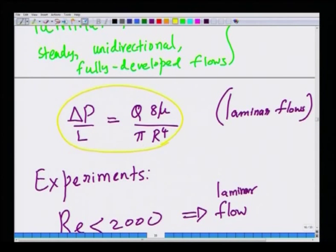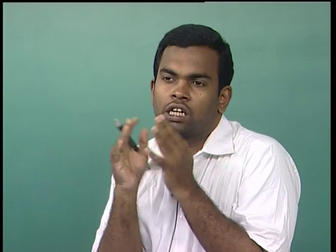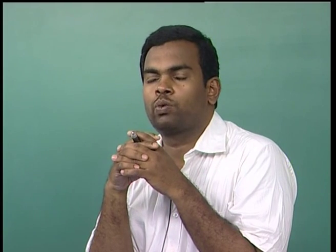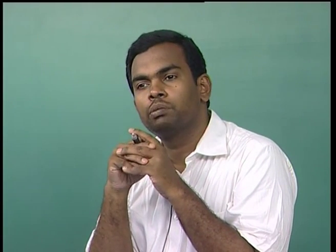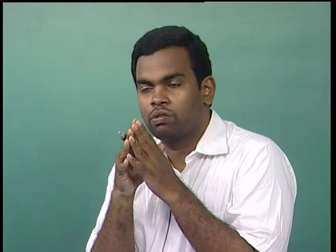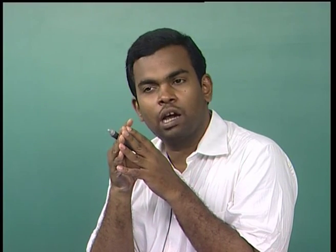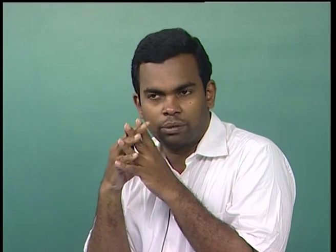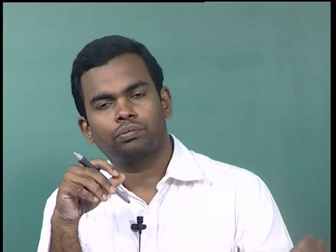When the Reynolds number is greater than 2000, there is a transition to turbulence and the laminar flow relation no longer works. In industrial applications, flow is often in the turbulent regime. One cannot solve the microscopic Navier-Stokes equations for turbulent flow because turbulent flow is unsteady and three-dimensional — a very difficult task. Therefore, one must resort to experimentation.